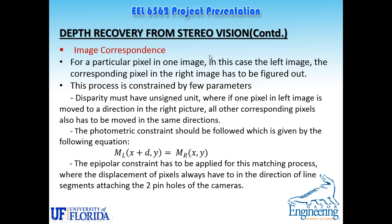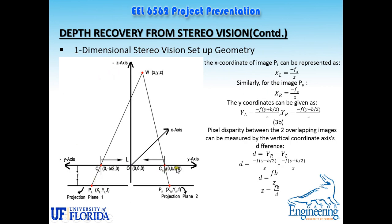Depth recovery from stereo vision uses image correspondence: for a particular pixel in the left image, the corresponding pixel in the right image must be found. This is constrained by several parameters. Disparity is always positive. If one pixel in the left image moves in a direction in the right image, all corresponding pixels must move the same way, satisfying the photometric constraint. The epipolar constraint requires that pixel displacement always be in the direction of the line segment connecting the two camera pinholes — in this case along the Y direction.